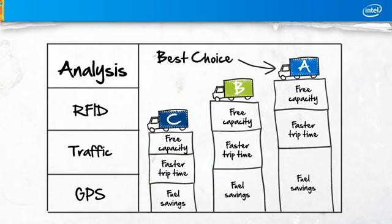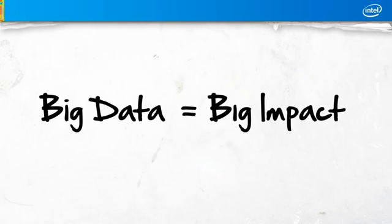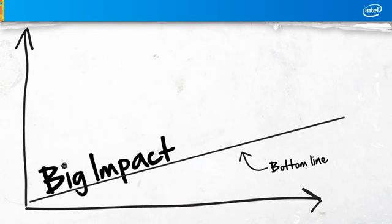But the only way to arrive at the optimal decision is to analyze multiple big data sources in real-time. And that's just one quick example of how big data can make a big impact on a company's bottom line.